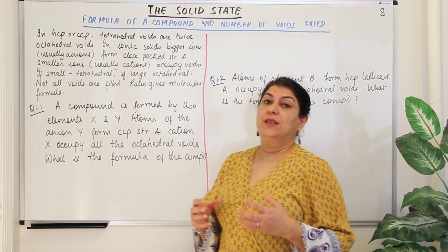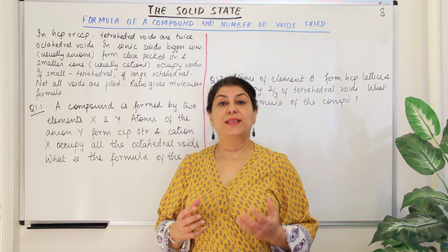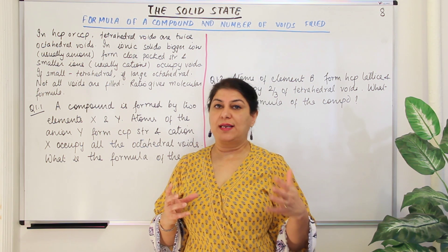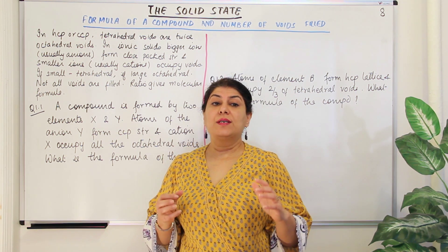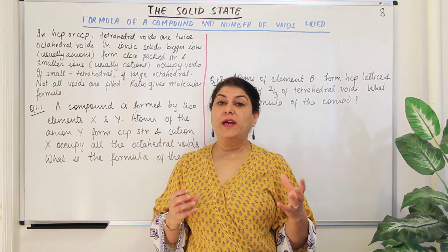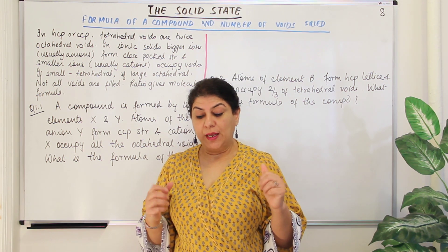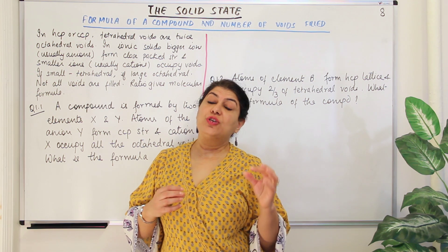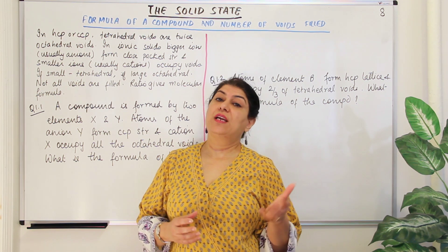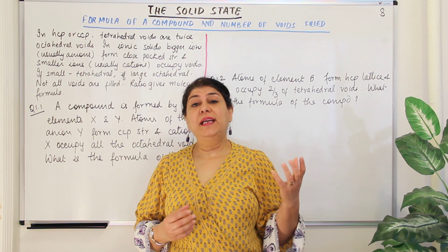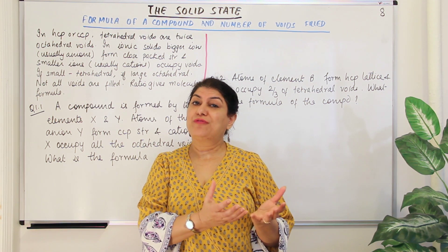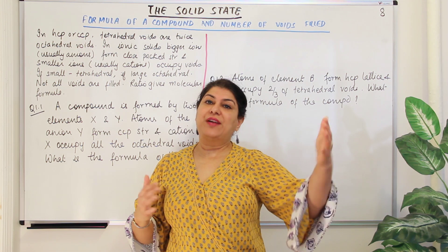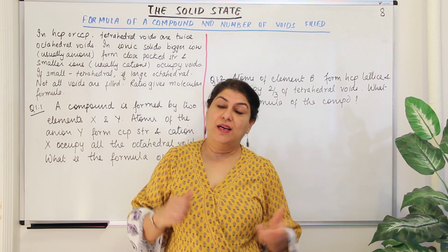Now that we know about the closed packed structures and unit cells, we know a unit cell has lattice points and there are two types of voids created in HCP packing: tetrahedral voids and octahedral voids. The knowledge of how these voids are filled helps us deduce the formula of a compound, especially ionic compounds. The formula of an ionic compound is a formula unit — the minimum ratio between the cation and the anion — and multiplication of that ratio gives you the entire crystal lattice.